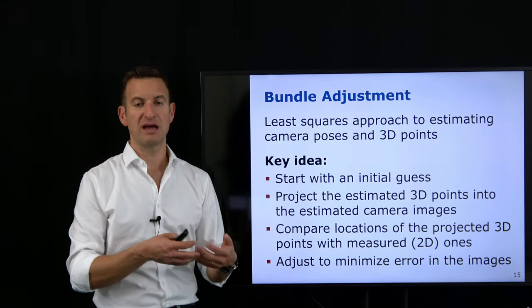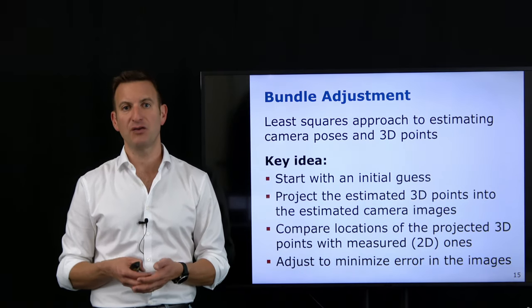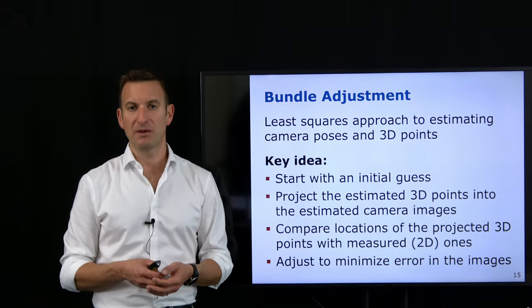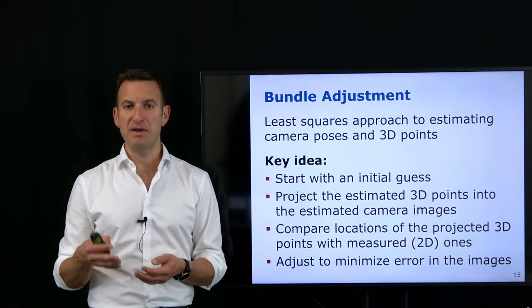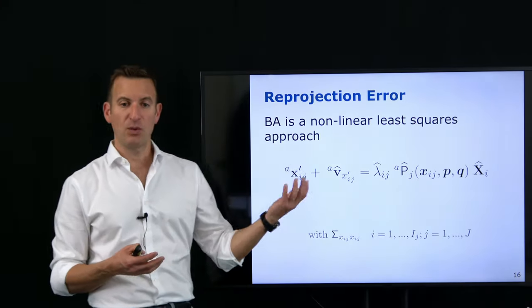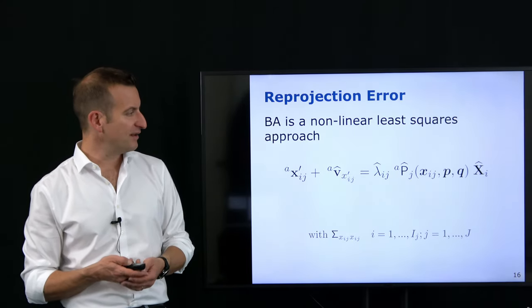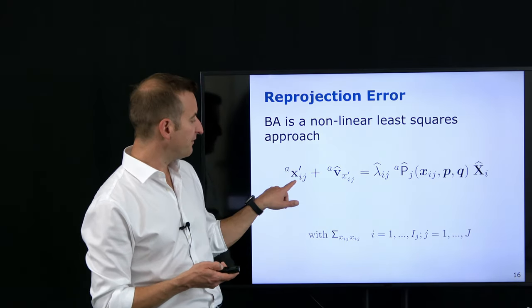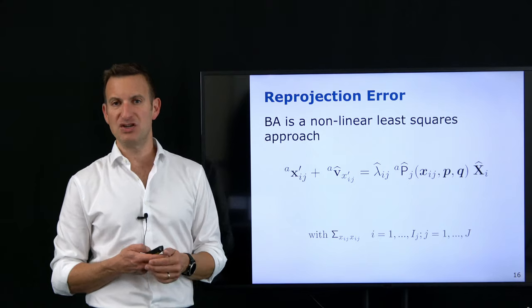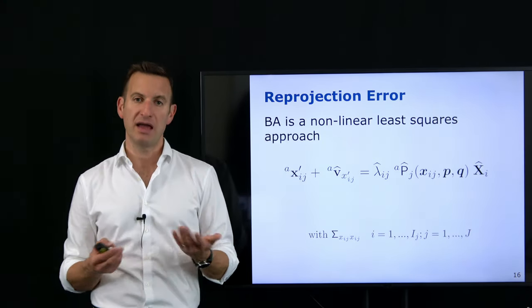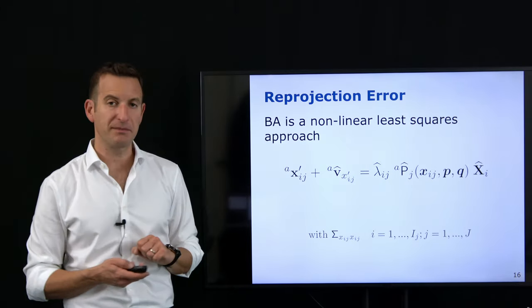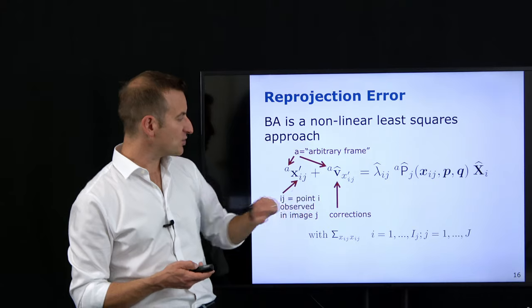I assume you know how to map a point from the 3D world into a camera image using the standard equation: small x (location in pixel coordinates) equals Px, where P is the projection matrix and x is the 3D point in the world. We arrive at the basic equation for my Gauss-Markov least squares model. On the left side we have the pixel location of point i projected into camera j, where i is the point ID and j is the image ID. These are my corrections v_xij — the discrepancy between where the point is mapped to according to my coordinates and where I actually observe it.